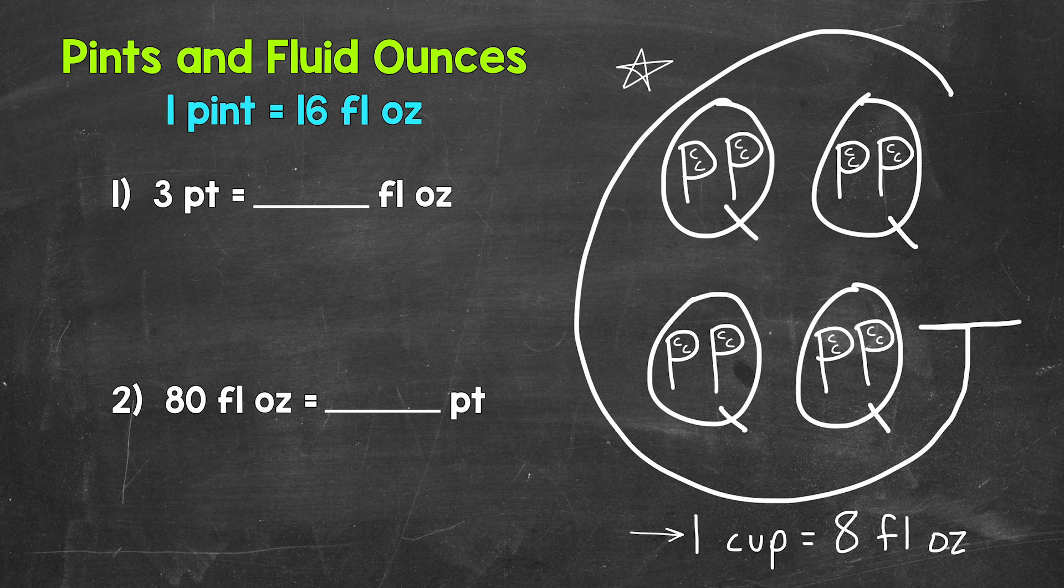So we have 16 fluid ounces, 16 fluid ounces, and 16 fluid ounces. So we need to do three times 16. And that's how we convert pints to fluid ounces. We multiply by 16.